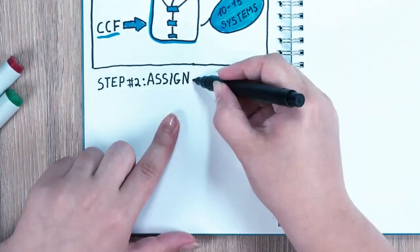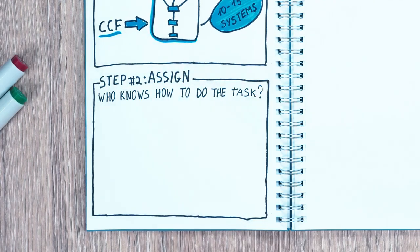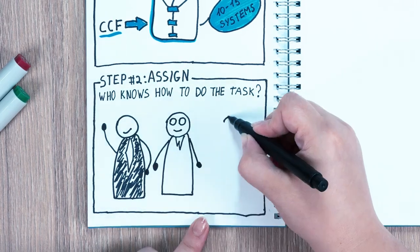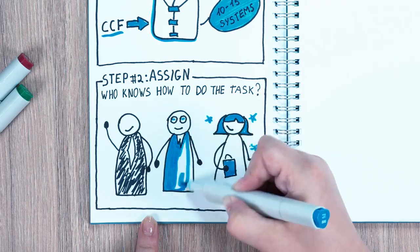Step number two is assign, and it's where you identify who has the knowledge to complete the critical tasks identified. As the business owner, you're encouraged to leave yourself out wherever possible. The focus should be on extracting what your best team members are already doing.